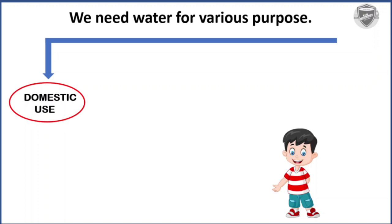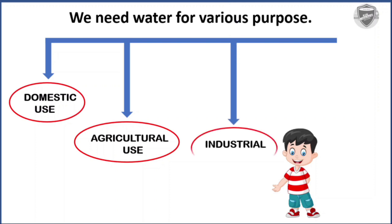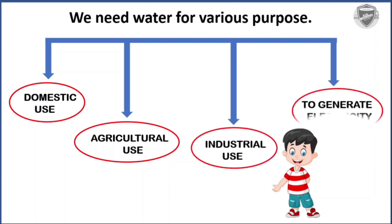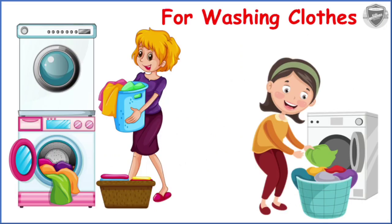Let's see them one by one: domestic use, agricultural use, industrial use, and we also need water to generate electricity.